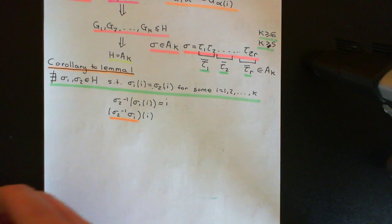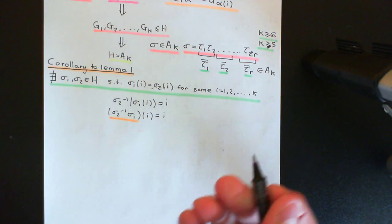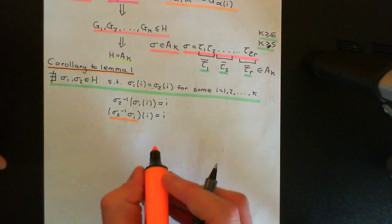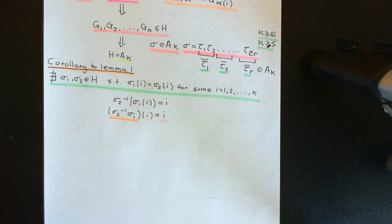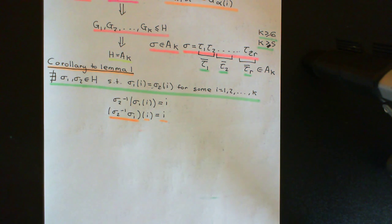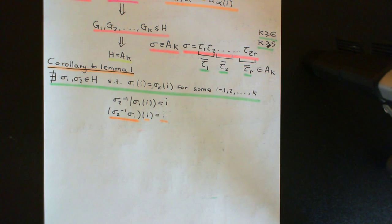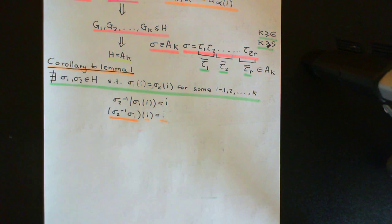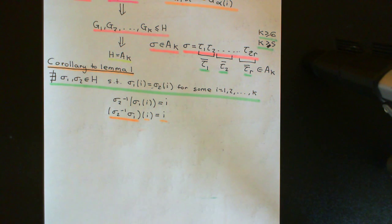Now here is an element that fixes the element i — it's mapping i onto i. And we know that's not allowed. By Lemma 1, no element in H can fix any of the elements in {1, 2, ..., k}. So the corollary is that there cannot exist any two elements in the subgroup that send one of the elements of {1, 2, ..., k} onto the same thing, otherwise there would be an element inside that subgroup that fixes it.